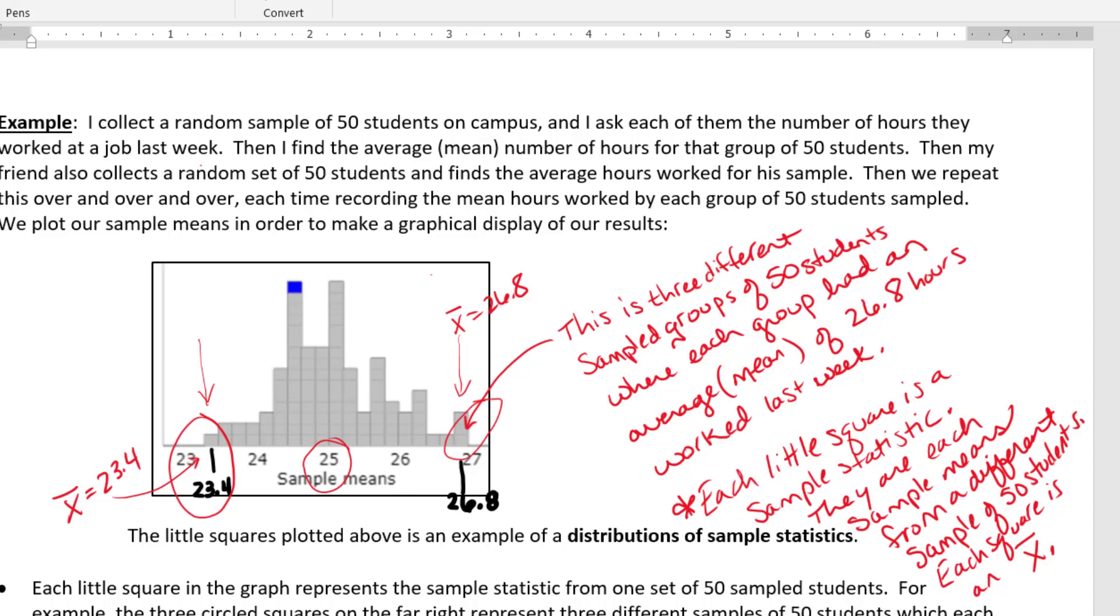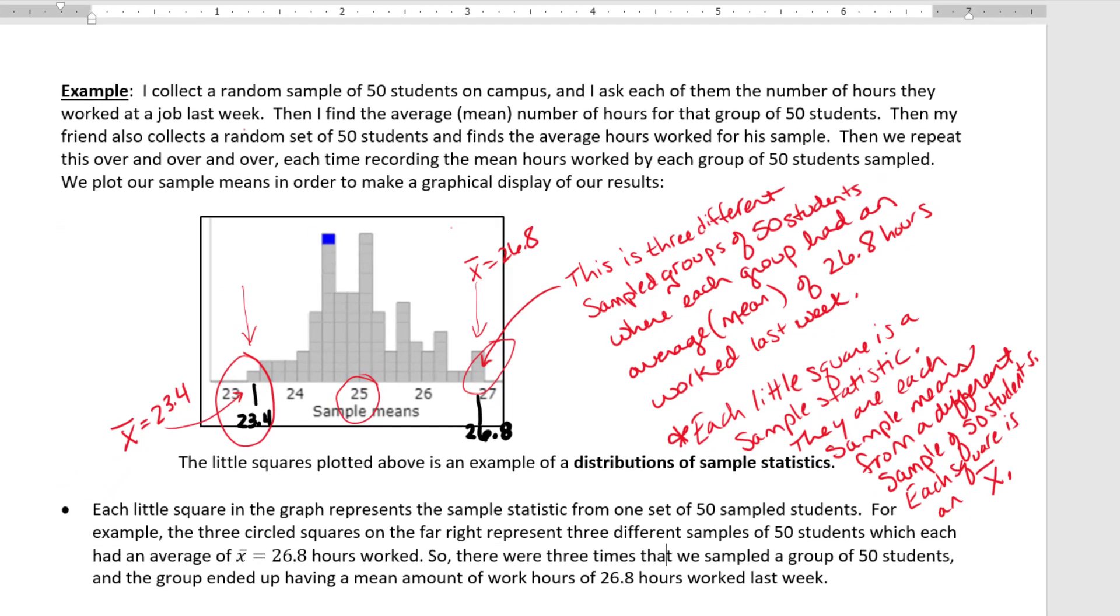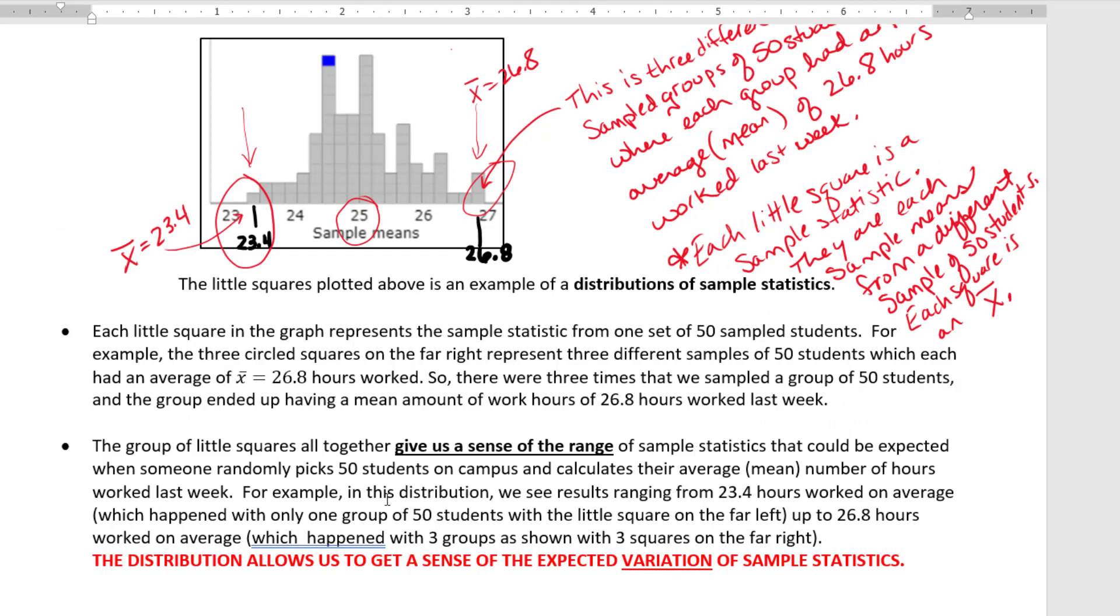Now why are we doing this? What's the point of creating these distributions of sample statistics? The group of little squares that we've created, this distribution of sample statistics, gives us a sense of the range of sample statistics that could be expected from someone randomly picking 50 students on campus and calculating the mean number of hours worked in that group last week.